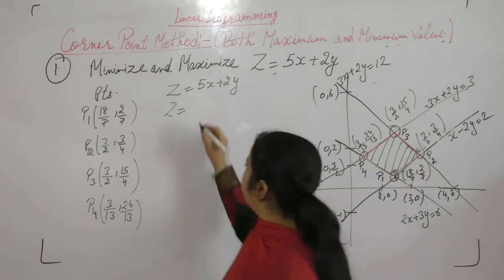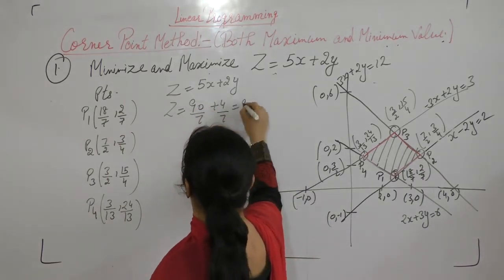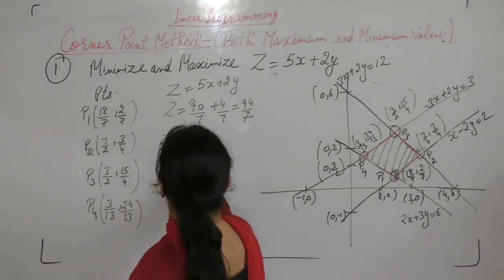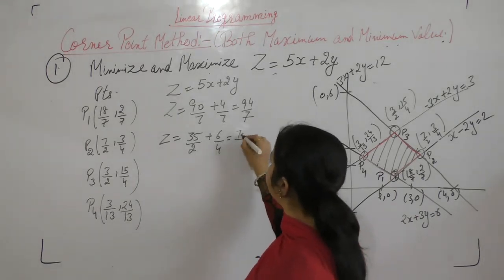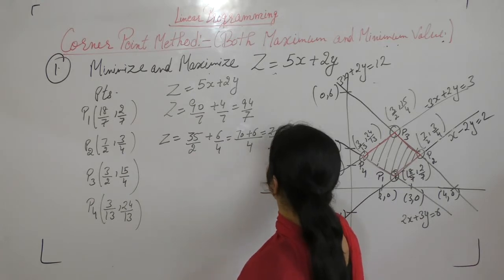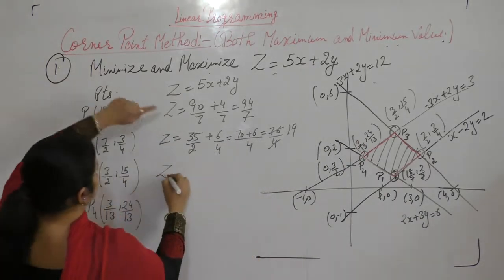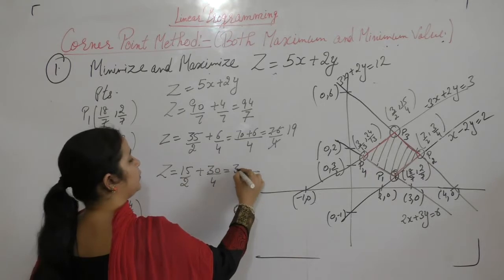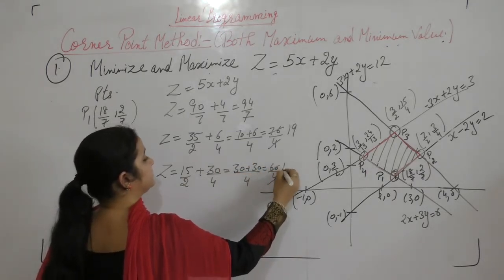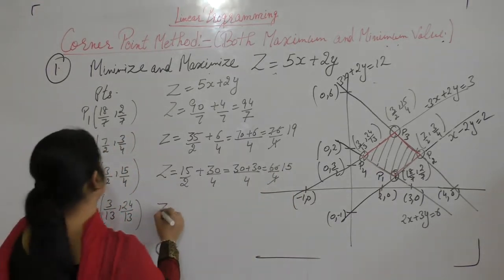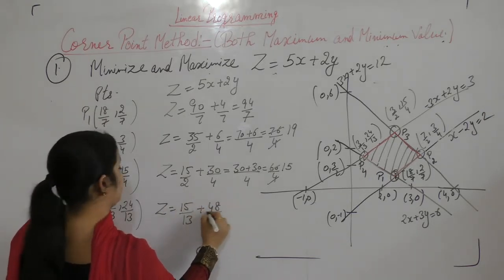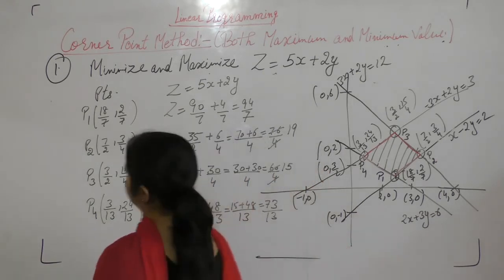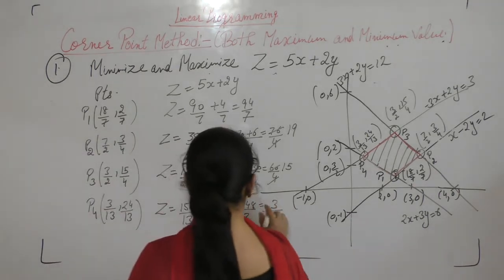At P1 (18/7, 2/7): z equals 5 times 18/7 plus 2 times 2/7 equals 90/7 plus 4/7 equals 94/7. At P2 (7/2, 3/4): z equals 35/2 plus 6/4 equals 70/4 plus 6/4 equals 76/4 equals 19. At P3 (3/2, 15/4): z equals 15/2 plus 30/4 equals 30/4 plus 30/4 equals 60/4 equals 15. At P4 (3/13, 24/13): z equals 15/13 plus 48/13 equals 63/13.